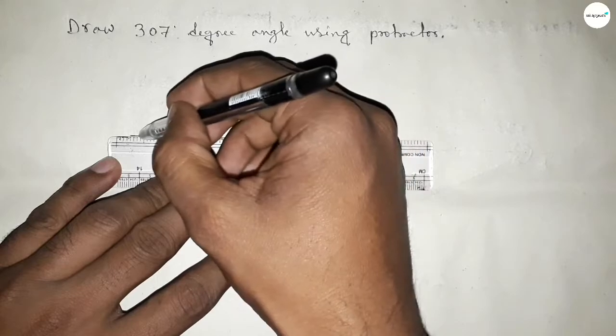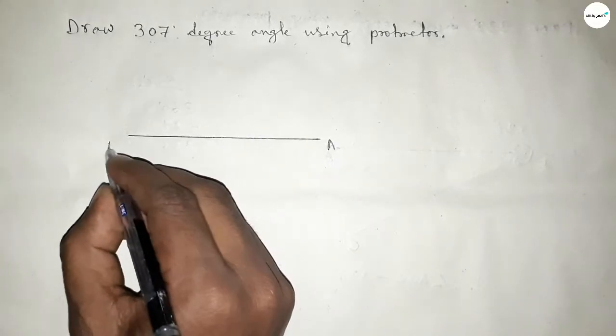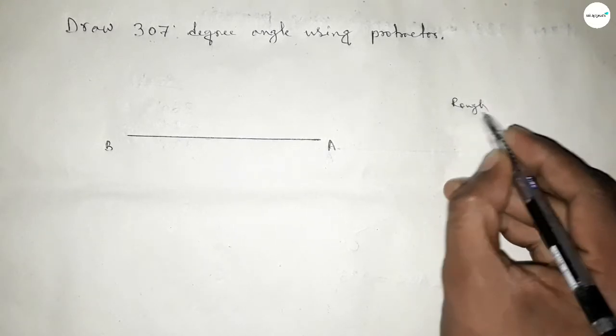So first drawing here a line, next taking A and here B. Now roughly discussing some important calculation here.